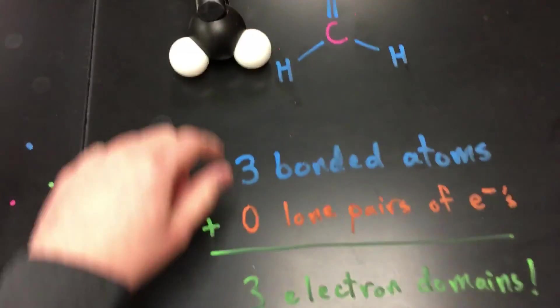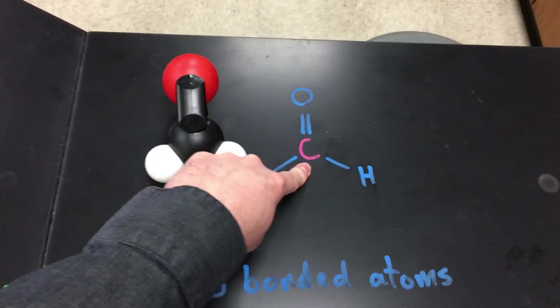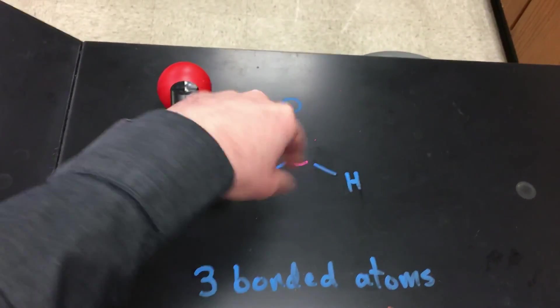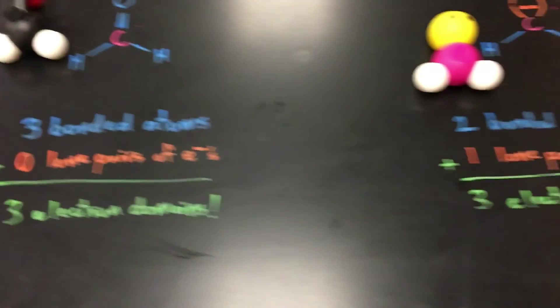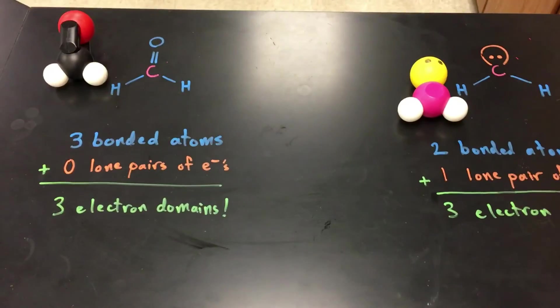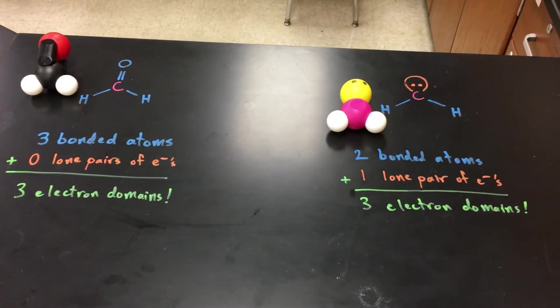I don't really care if oxygen's got lone pairs up here. I want to know how this atom has bonds and lone pairs arranged around it, not these other atoms up here. Okay so whether I'm looking at this or this, they both have three electron domains which is why they end up with very similar shapes.